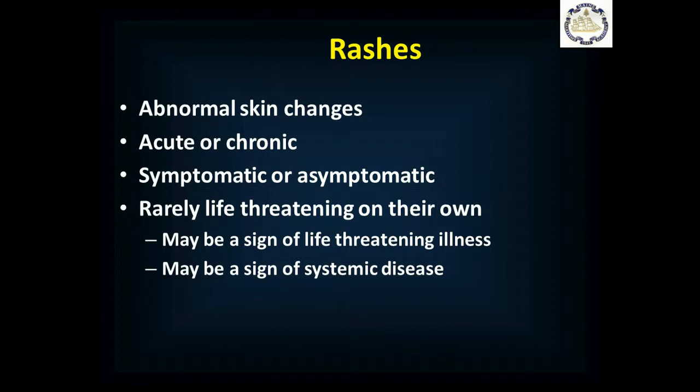So what's a rash? It's an abnormal skin change; rashes can be acute or chronic, and we'll focus on acute ones here. They can be symptomatic or asymptomatic. Unless a rash is so extensive it functions like a burn — destroying enough skin that you can't control your temperature and are at risk for infection — very rarely are rashes in and of themselves life-threatening. But they can be signs of systemic illness and even life-threatening disease.